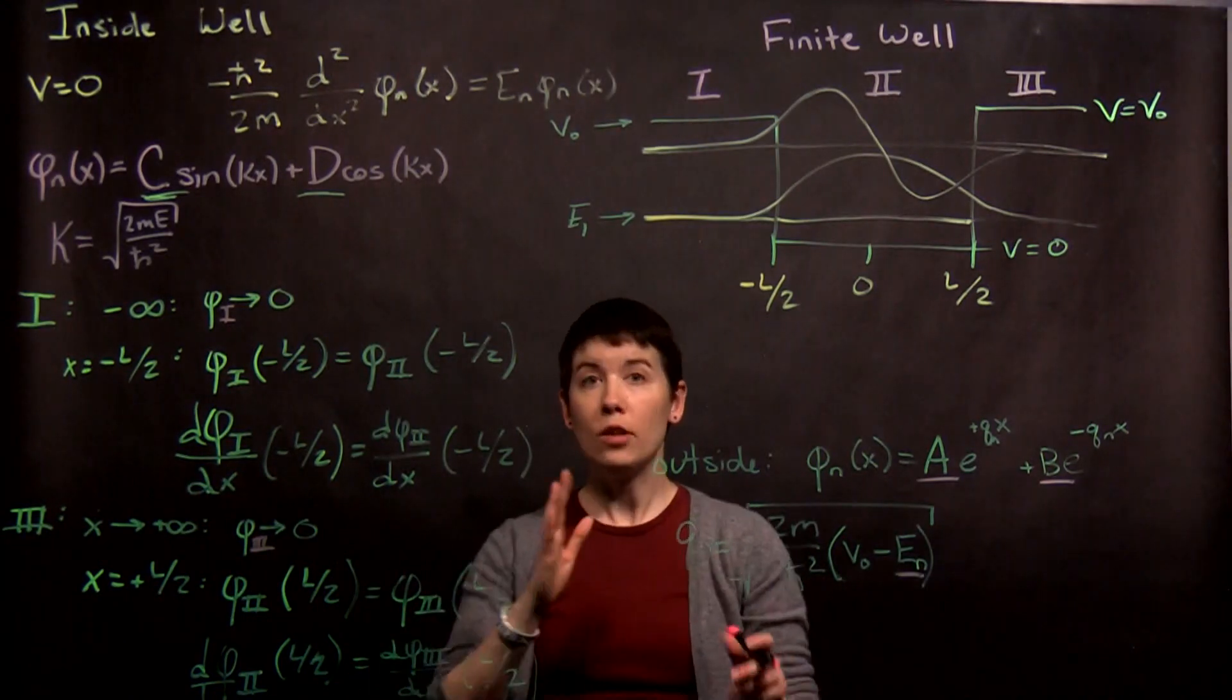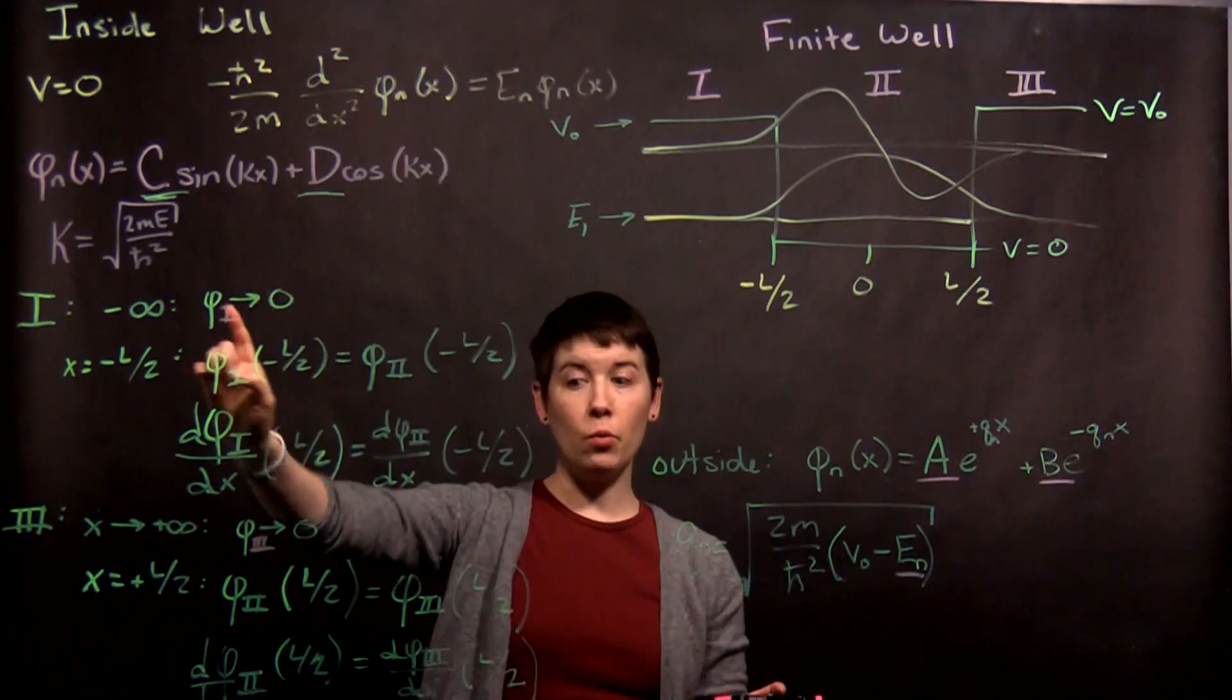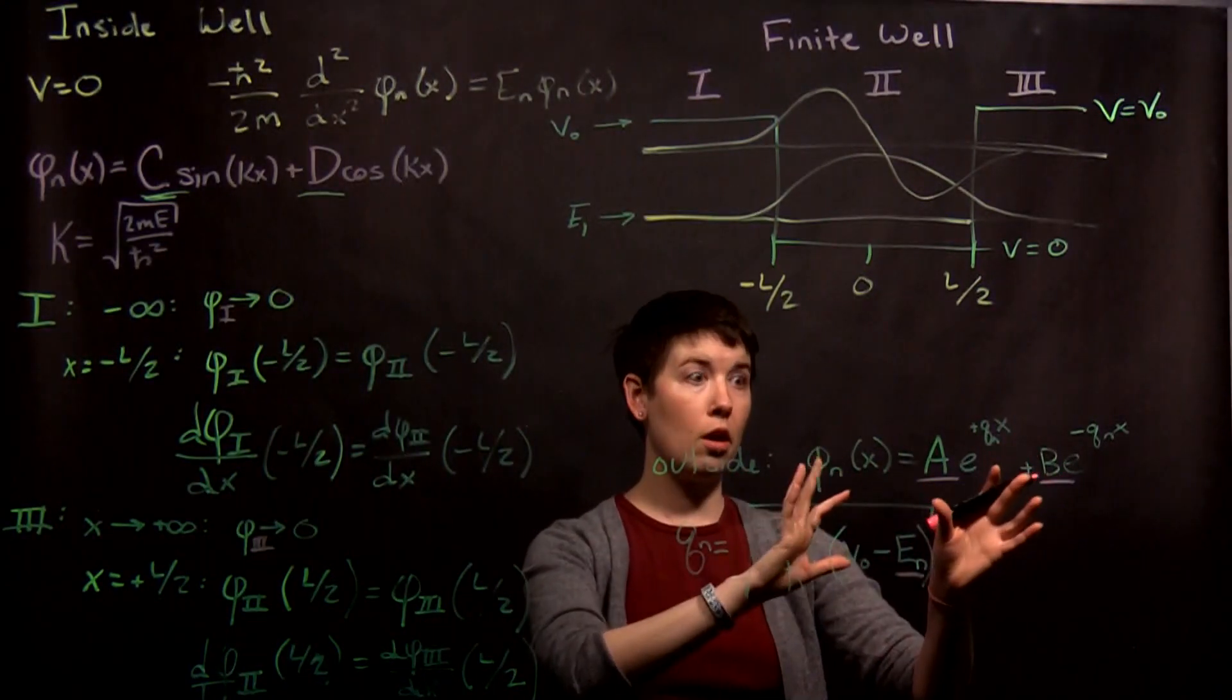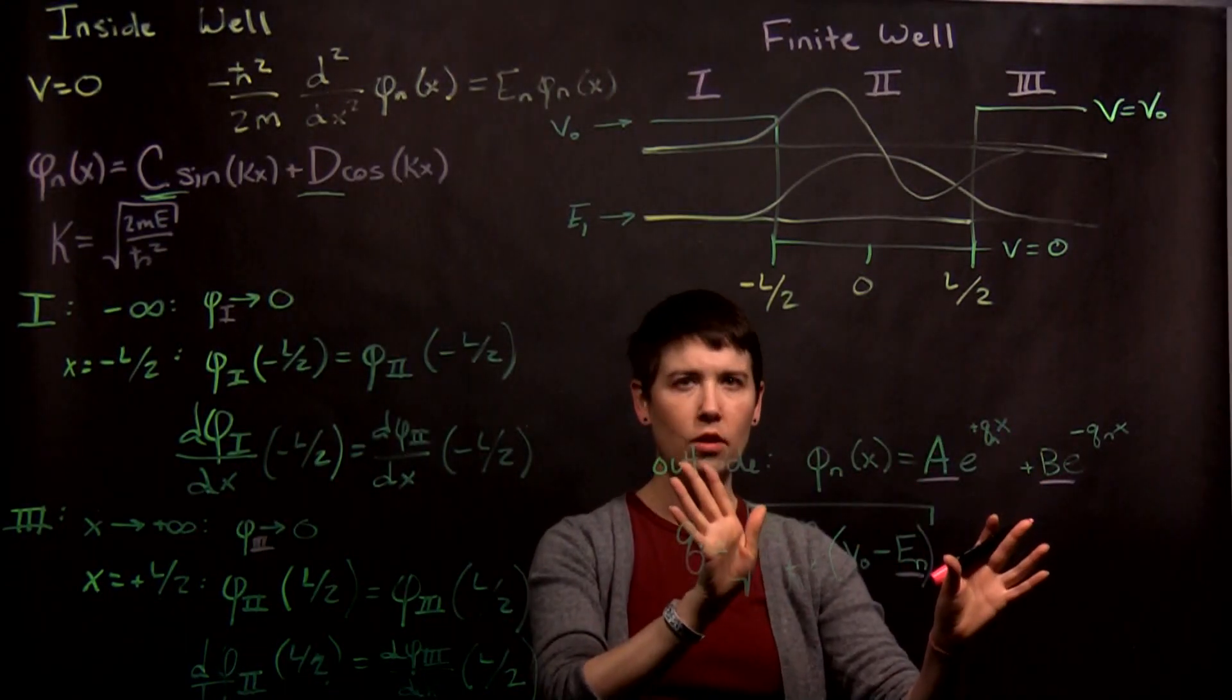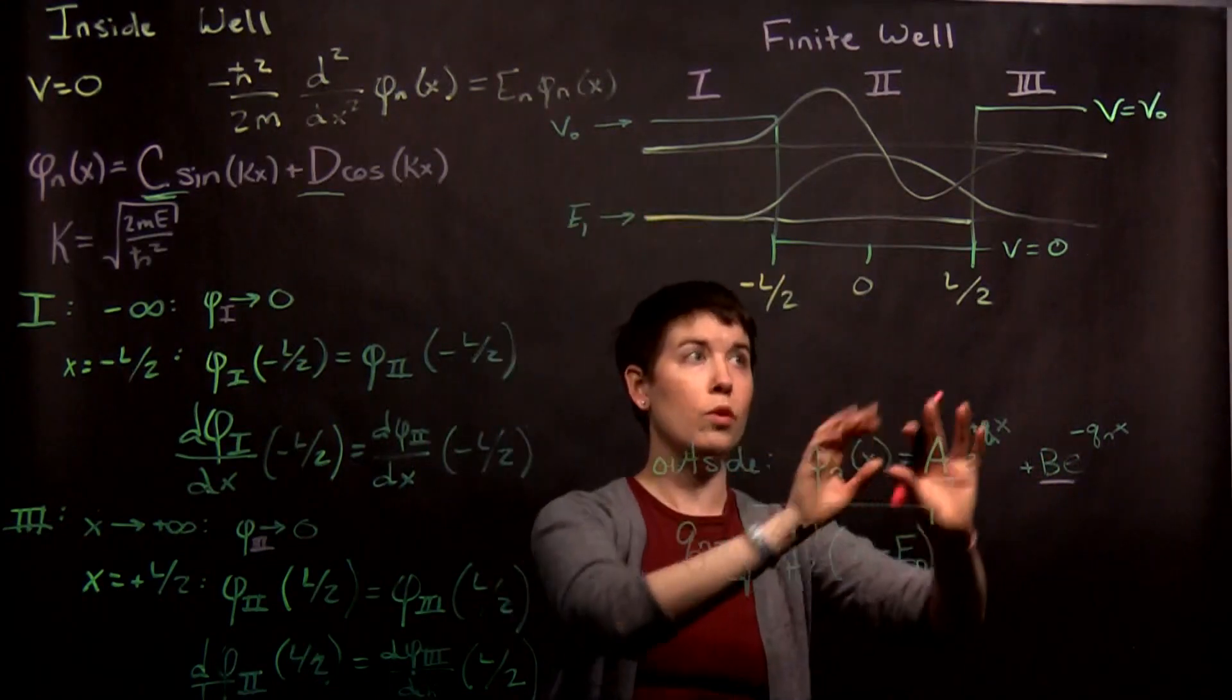Now, there's one thing that's really important to understand before we do this. Phi one and phi three are different. They are both going to have this form, but they are different, okay? So, recognize that this is, we're going to have one version of this over here, one version of this over there.